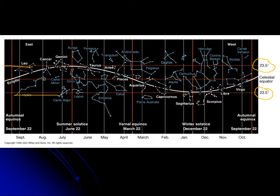What is directly overhead for us in the Fort Worth area? It's close to 33 degrees — between 32 and 33 degrees north latitude. But the farthest north the Sun ever gets is 23.5 degrees, which means the Sun is never directly overhead for us.